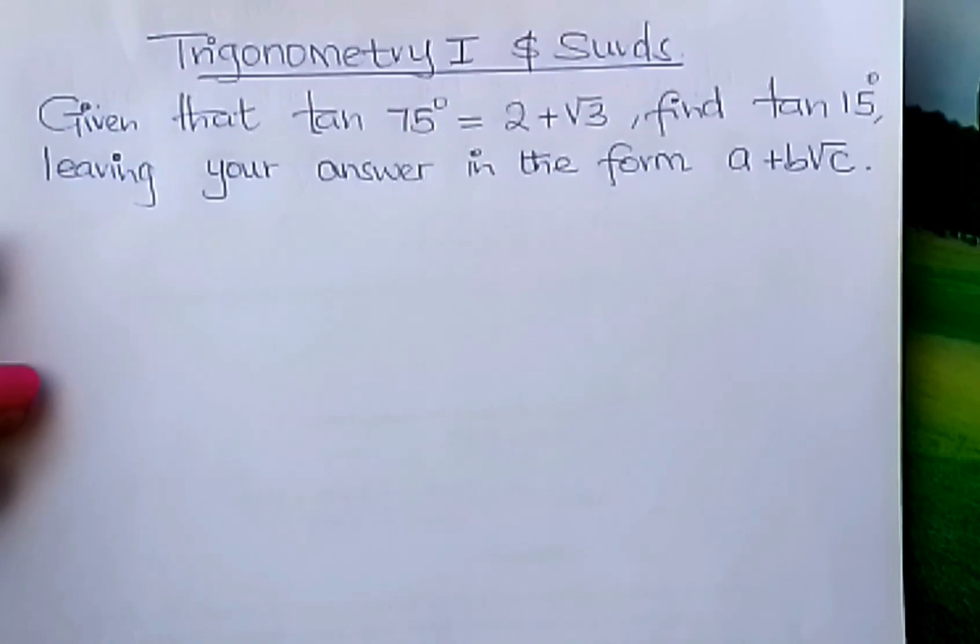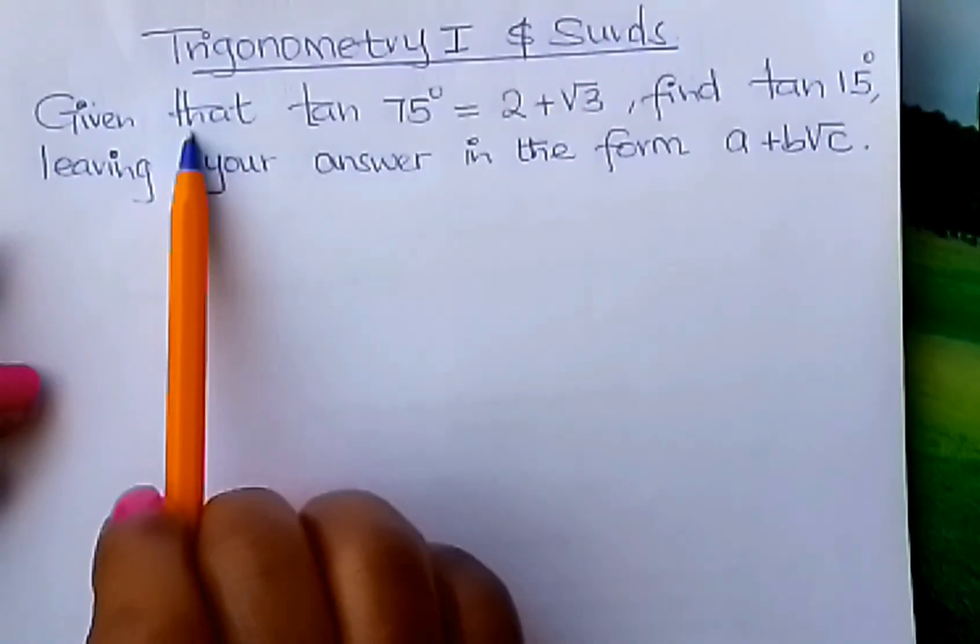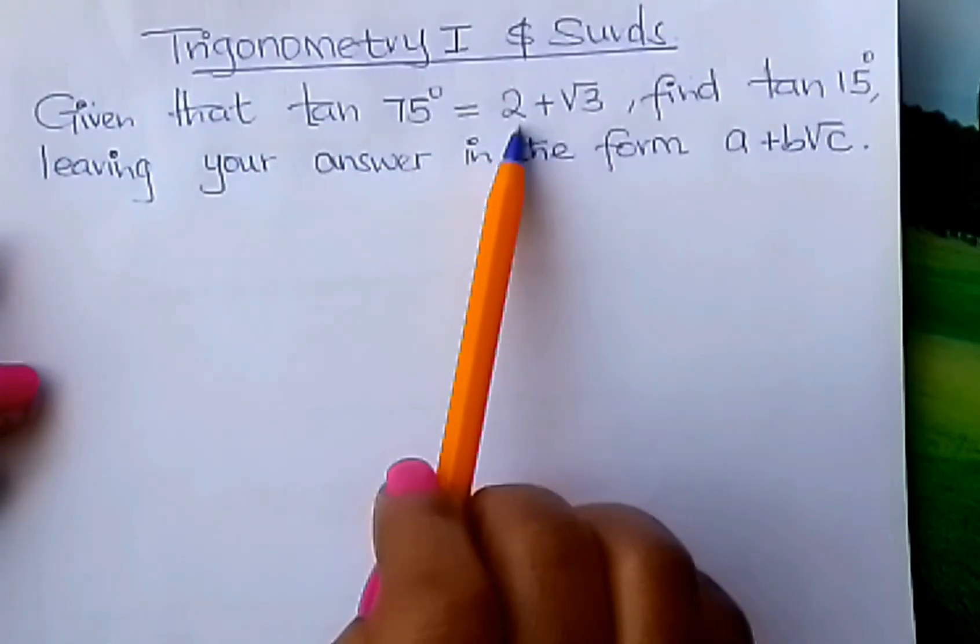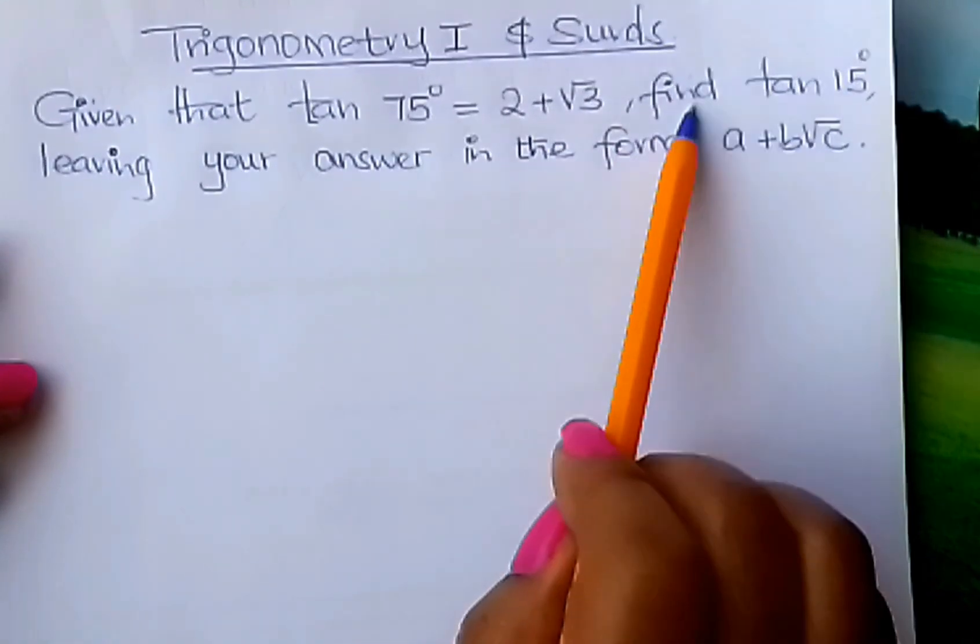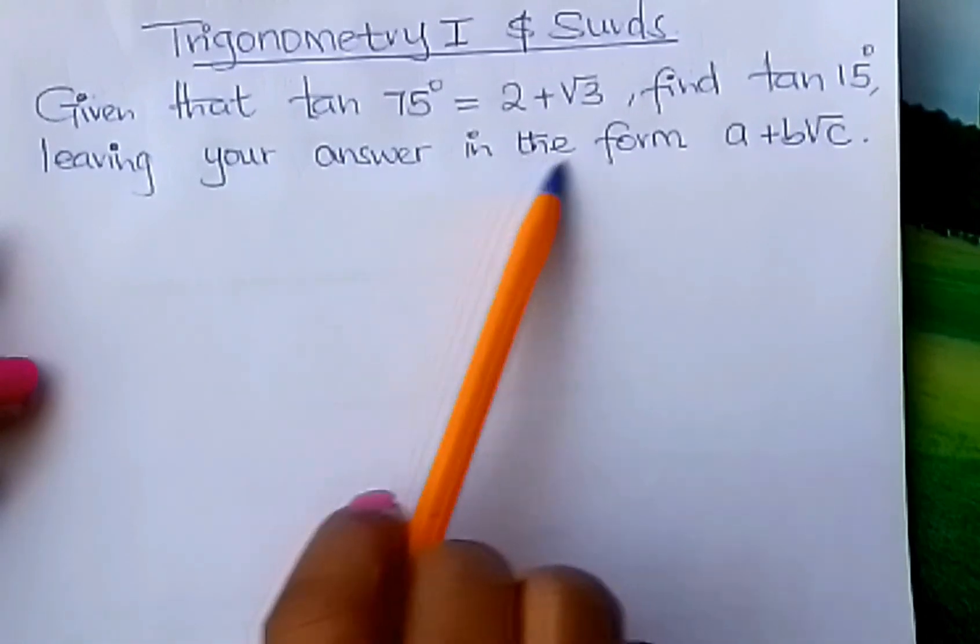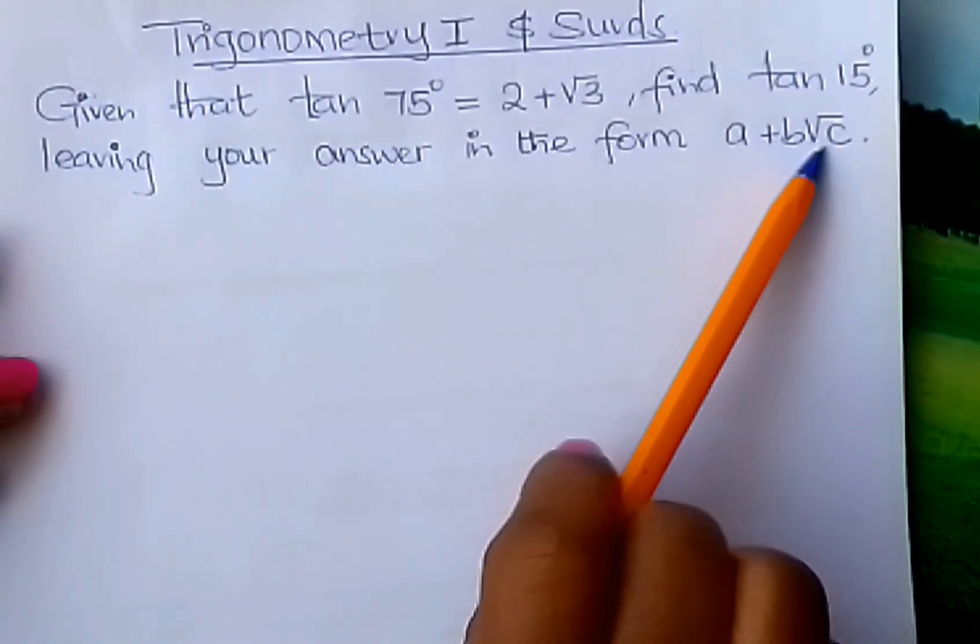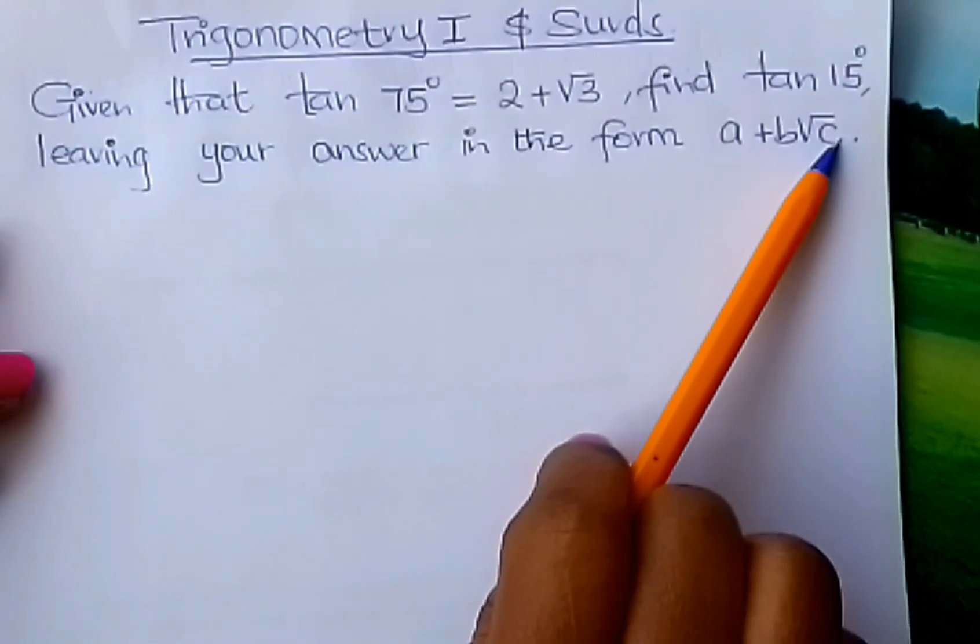Let us look at this question. We are told that given that tan 75° is equal to 2 plus square root of 3, find tan 15°, leaving your answer in the form a plus b square root of c.